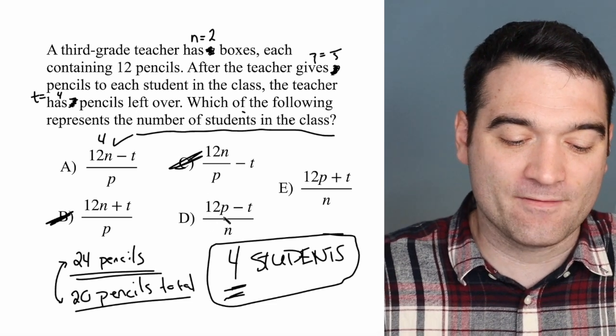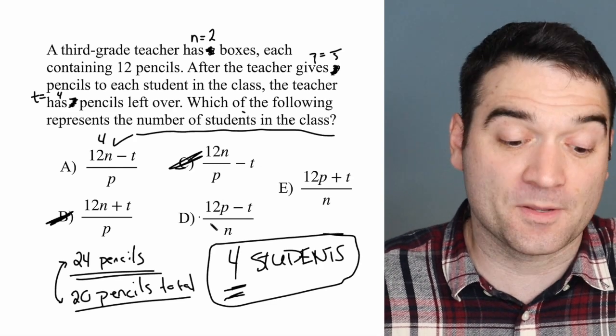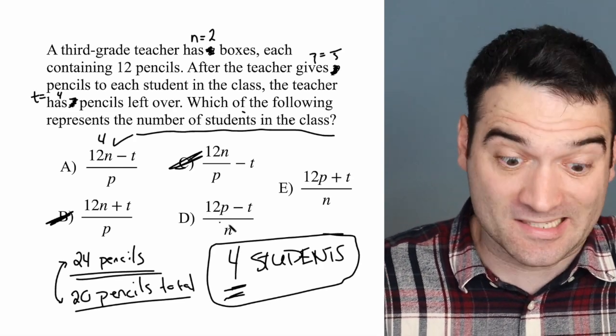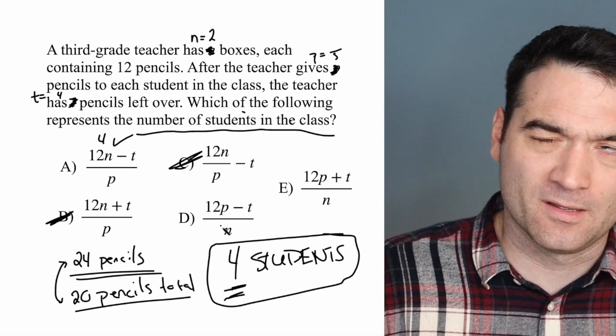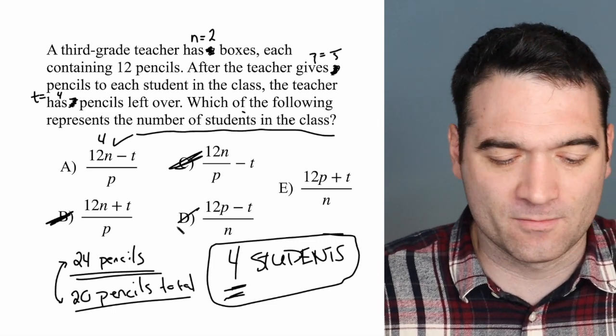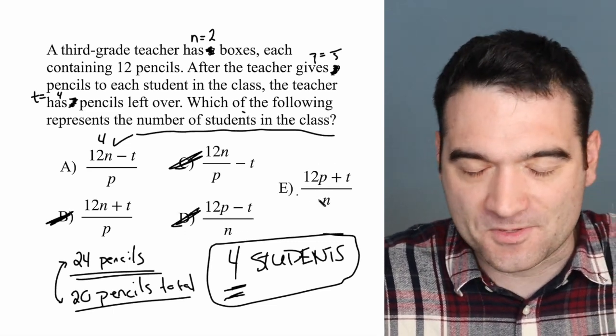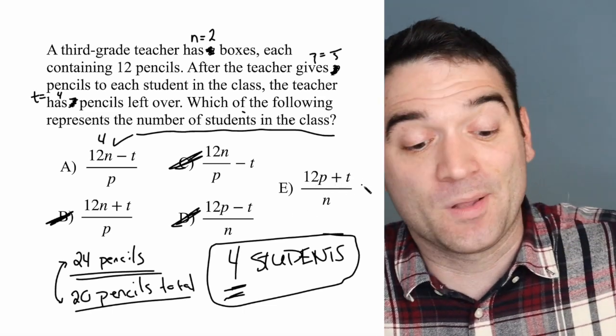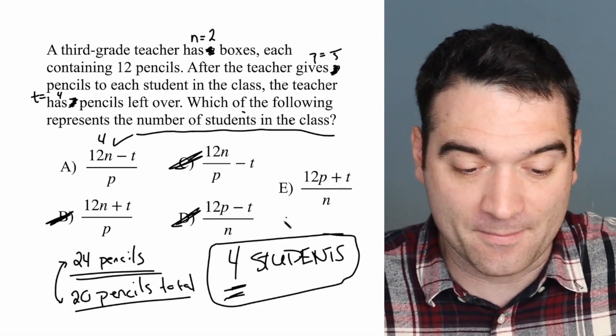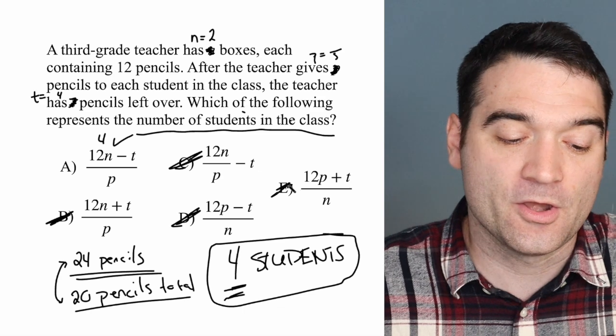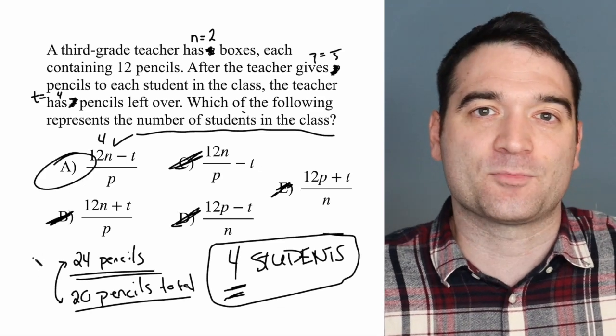12 times 5, yeah, 12 times 5, so that's 60, minus 4, divided by 2? No, not 4. And then 12 times 5, 60, again, way too high. Plus 4, 64 divided by 2, 32. No, the only one that works is answer option A.